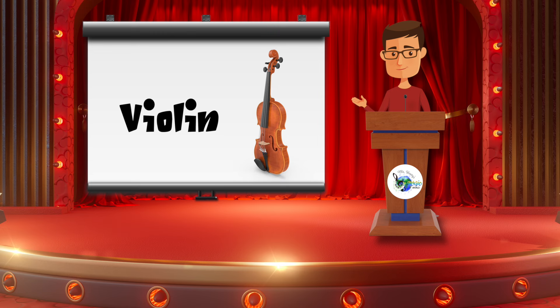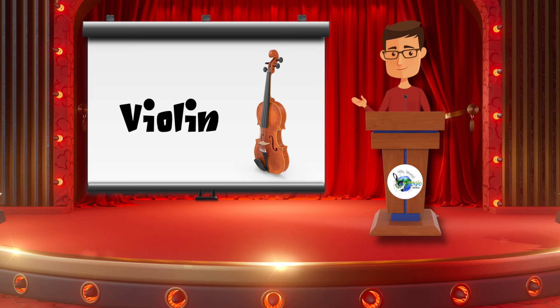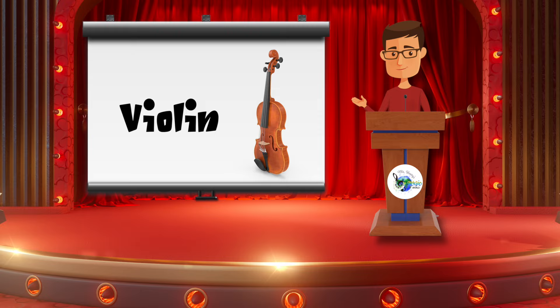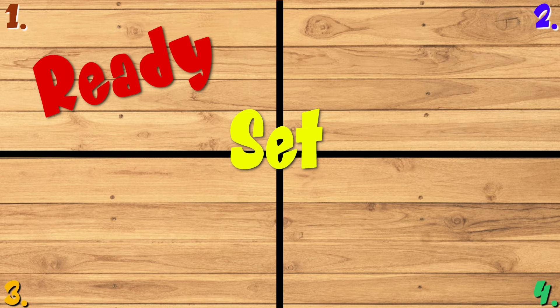The violin is part of the string family because, well, it has strings. You can pluck the strings with your fingers, which is called pizzicato, or use a bow, which is called arco. On to the next round — ready, set, go.